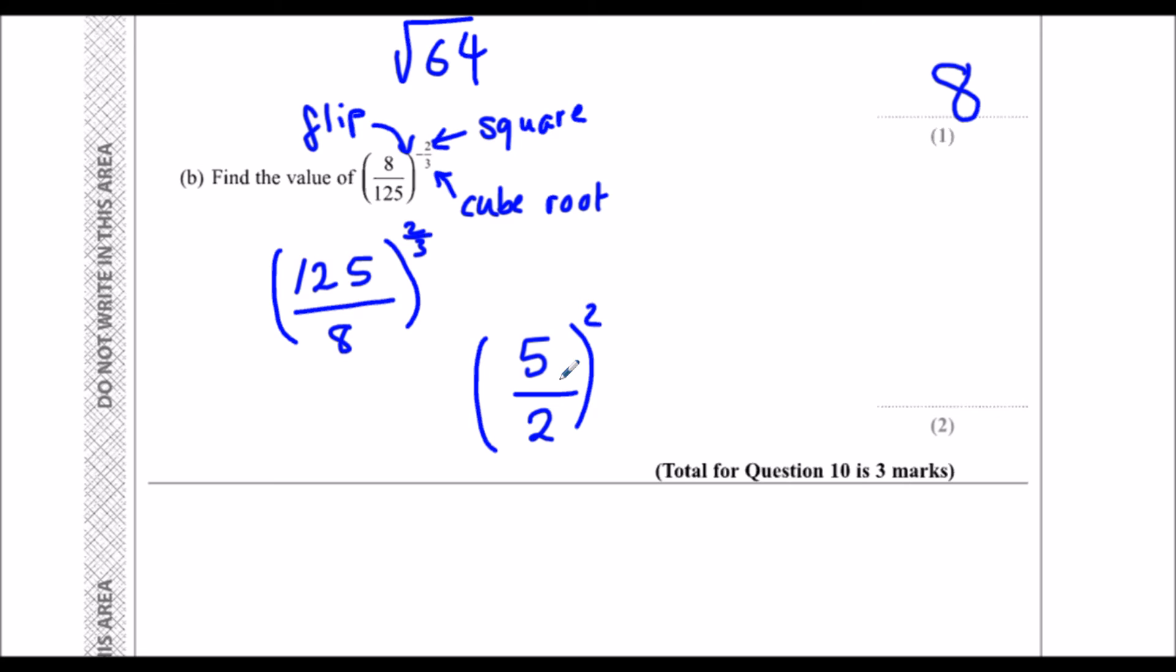That leaves me with 5 over 2 squared. Now I'm just going to square the top, so 25, square the bottom, 4, and that's the answer.